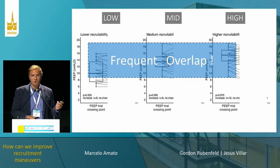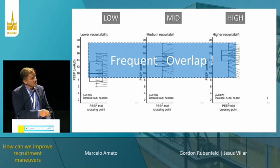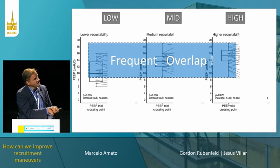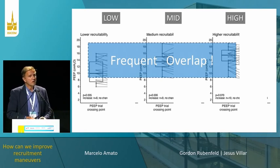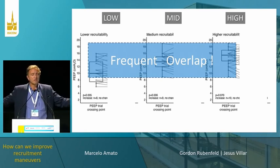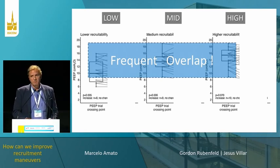This is a very important clinical conclusion. Some patients needed just 10 cmH₂O of PIP to recruit more than one-third of the parenchyma. This is very interesting.